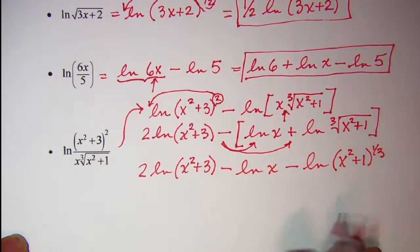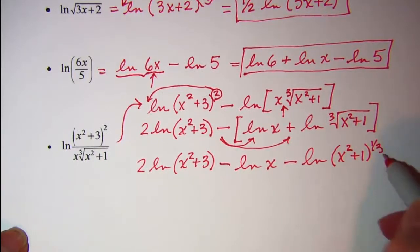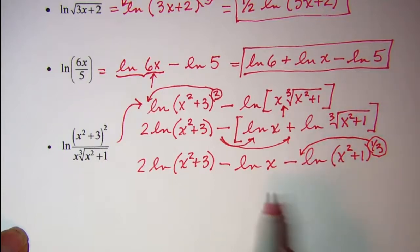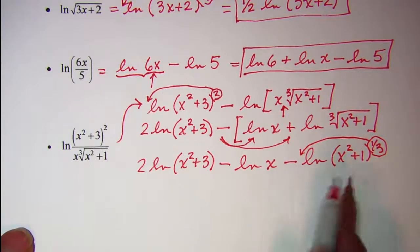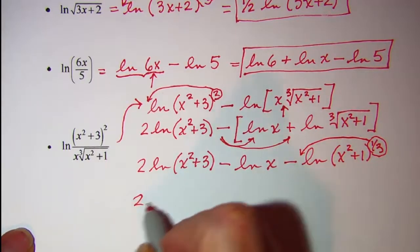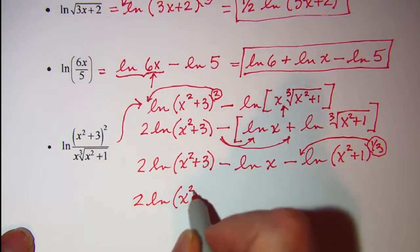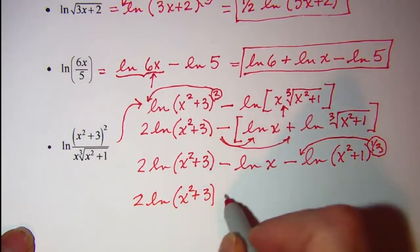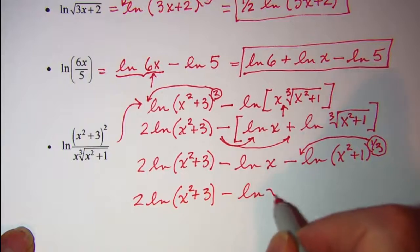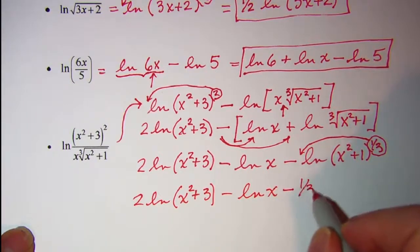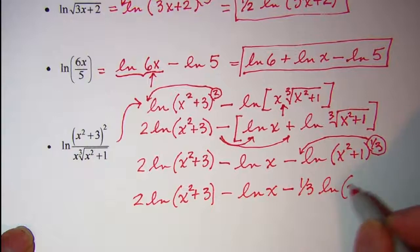That one-third power allows me to use the fourth property to bring the exponent out in front of the logarithm. So the final answer is: 2 ln of x squared plus 3, minus ln x, minus one-third ln of x squared plus 1.